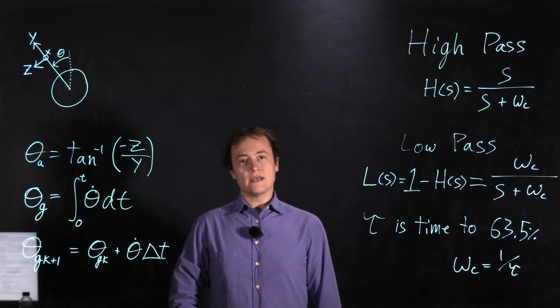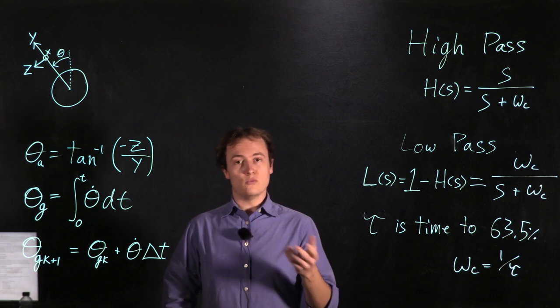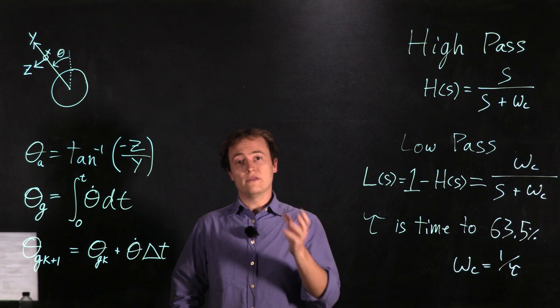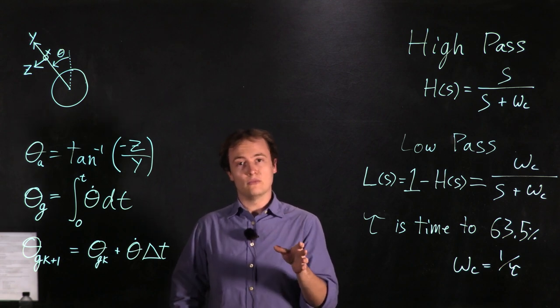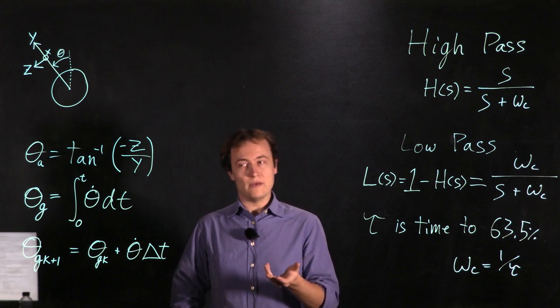In this video we're going to take a look at some of the issues and solutions that come with trying to estimate the angle of a real body with an accelerometer and a gyroscope. This is the first problem that you're going to come across when you start to try to balance your MIP.